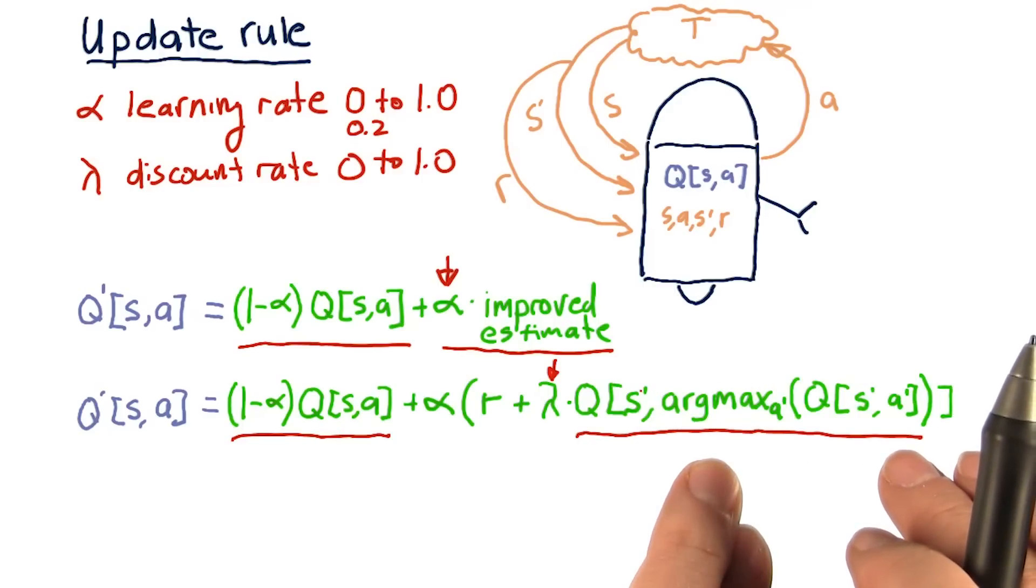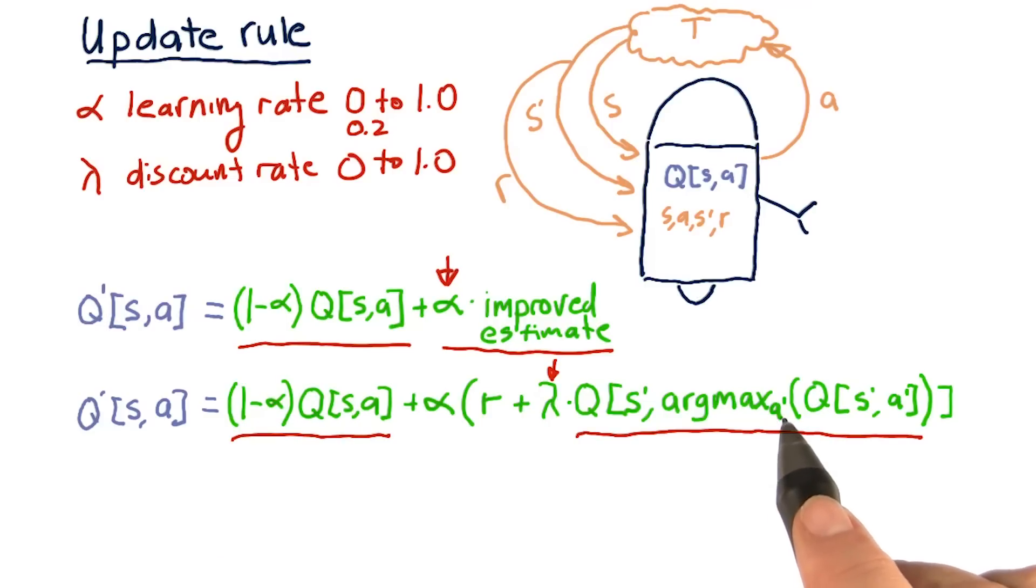the action that we would take that would maximize our future reward is argmax A prime. So A prime is that next action that we're going to take with regard to Q, S prime, A prime. So we're going to find that best A prime, that best action that maximizes the value when we're in that state.